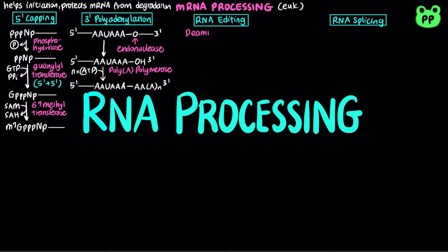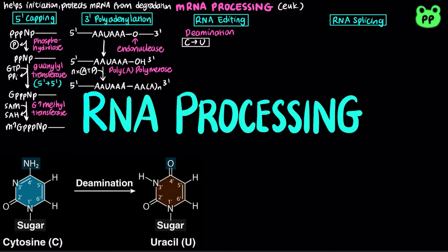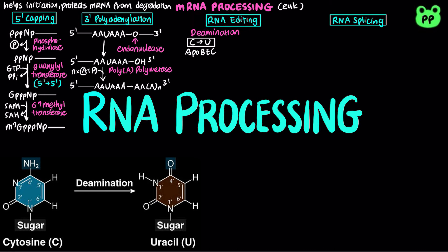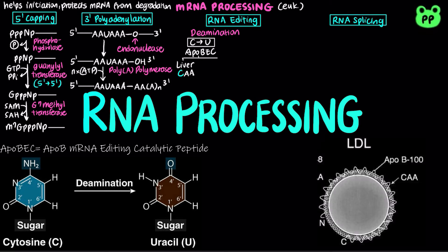In some cases, the polypeptide coding region of the mRNA is also modified by RNA editing. For example, deamination of cytosine to uracil plays an important role in the gene expression of lipoproteins, which functions in transporting lipids between different cells. APOBEC, which stands for ApoB mRNA Editing Catalytic Peptide, is responsible for the differential gene expression of apolipoprotein B in the liver and intestine. In the regular version of apolipoprotein B, known as ApoB100 produced in the liver, the sequence CAA codes for glutamine. ApoB100 is found in low-density lipoprotein, which functions in the endogenous pathway of lipid transport.